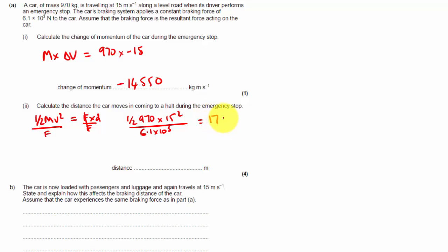divided by the force which I'm given here is 6.1 times 10 to the 3 Newtons. OK, and when I calculate this I get a value of 17.889 something something something, which I'll round to 17.9 metres, which is correct.